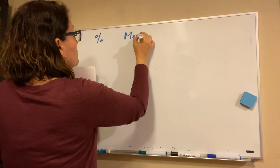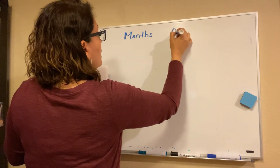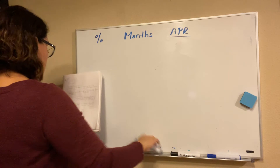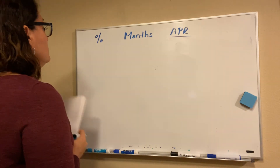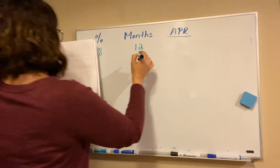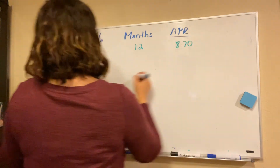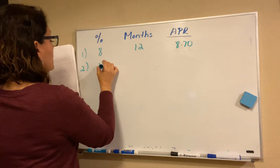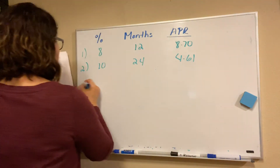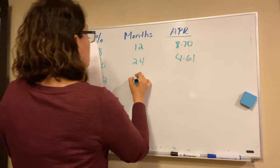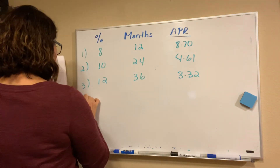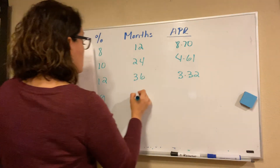Here are the APR table values — the percent and the months — that you'll need for each question. Number one: 8% for 12 months, APR is 8.70. Number two: 10% for 24 months, APR is 4.61. Number three: 12% for 36 months, APR is 3.32. Number four: 9% for 48 months, APR is 2.49.